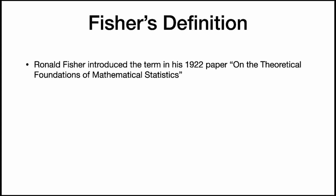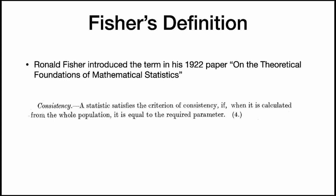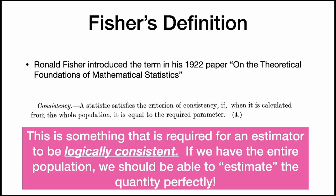Ronald Fisher introduced the term consistency in his 1922 paper, and he said a statistic satisfies the criterion of consistency if, when it is calculated from the whole population, it is equal to the required parameter. So this is required for an estimator to be logically consistent — if we have the entire population, we should be able to estimate the quantity perfectly.